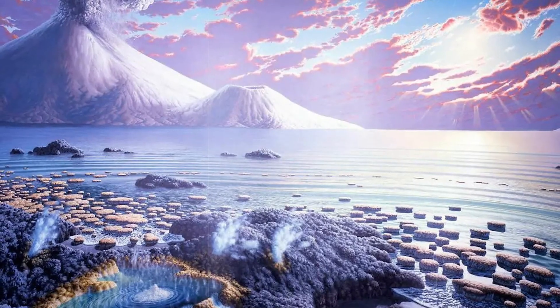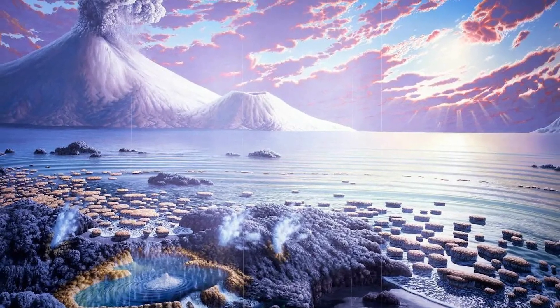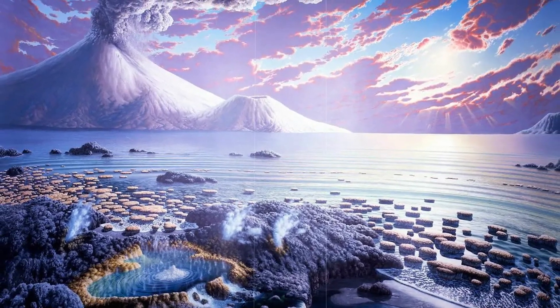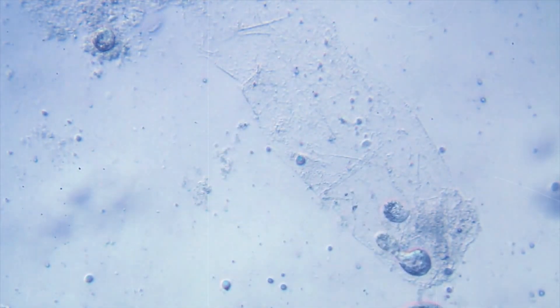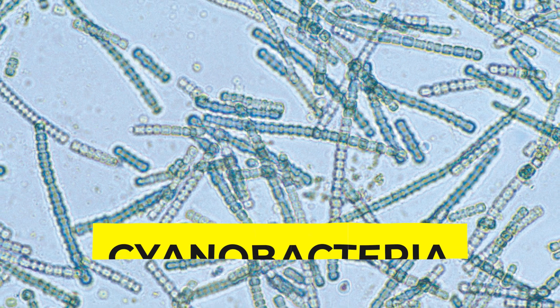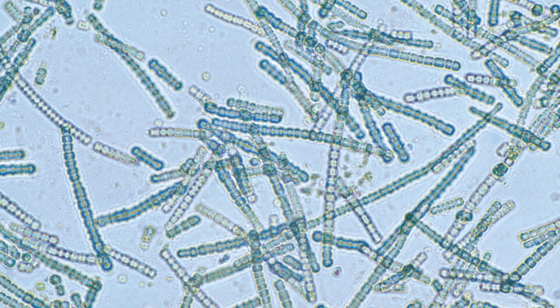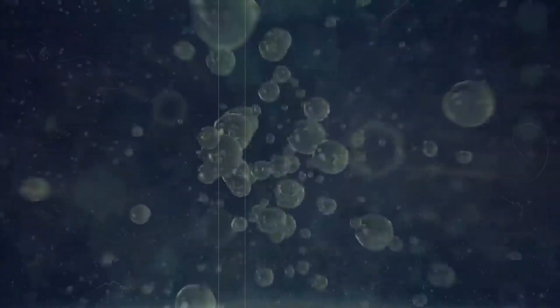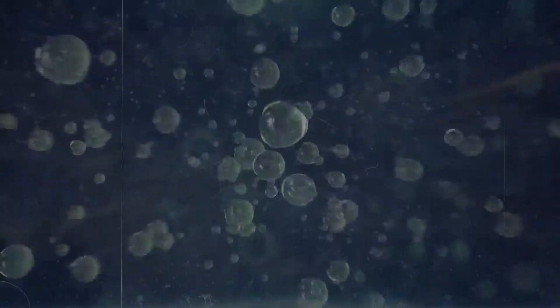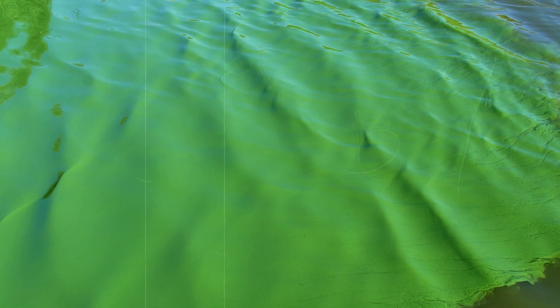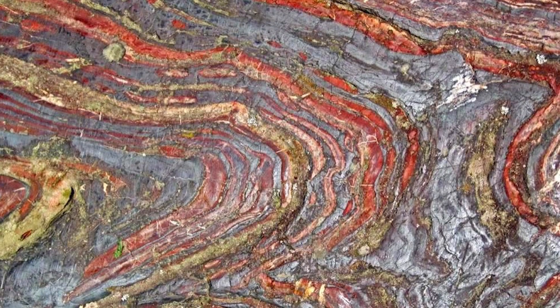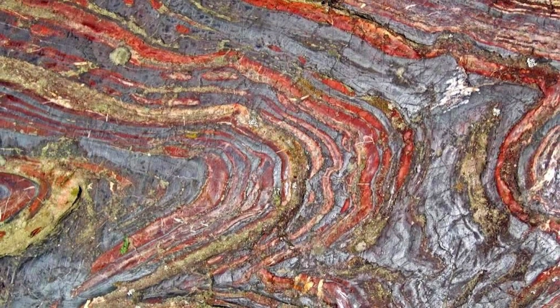The Paleoarchaean era was a period of mountain formation and the continued formation of minerals. At this stage, scientists believed that the only life on Earth was bacteria. The orange haze in the atmosphere was caused by photosynthesizing bacteria called cyanobacteria. These bacteria evolved the ability to convert light and water into energy, releasing oxygen in the process. The dissolved oxygen caused iron in the oceans to rust and sink to the sea floor, forming striking red-banded iron formations.